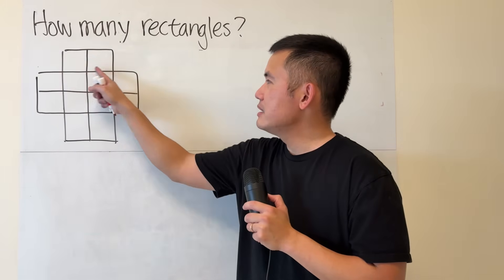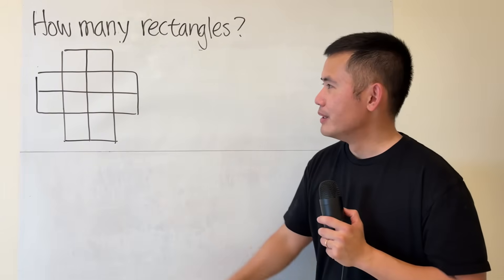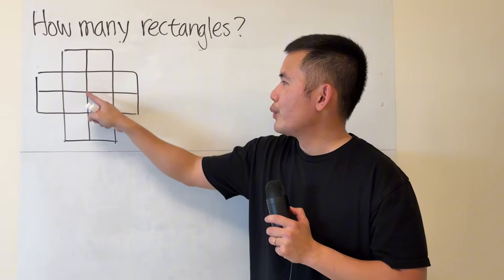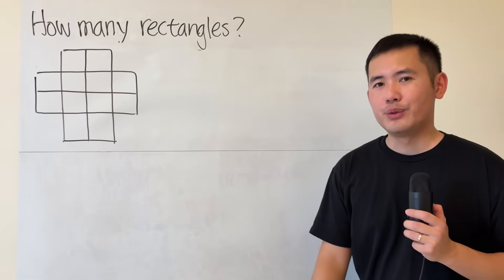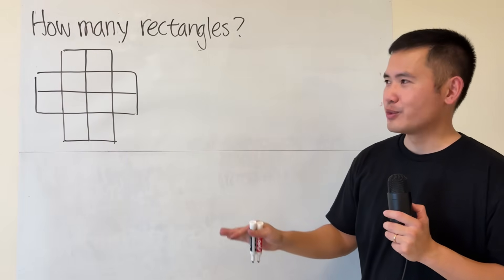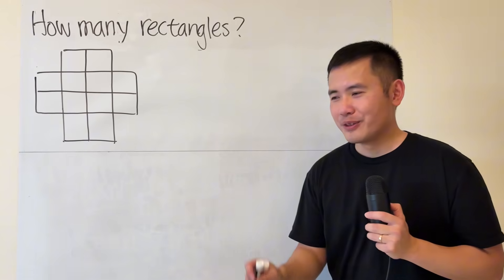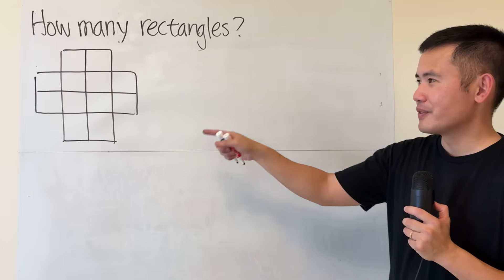because this is another rectangle. So is this. So is that. So we have more than 15 already, right? And of course, don't just write down more than 15. We are going to find out the exact number of rectangles from this figure here.